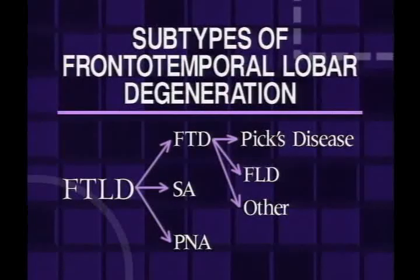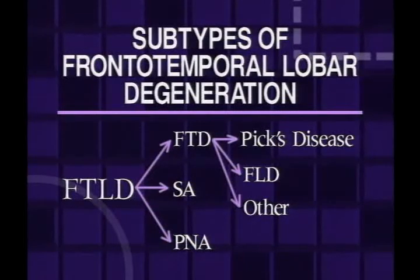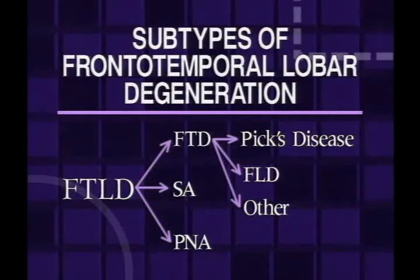Let's begin by talking about the types of dementia under the heading of frontotemporal dementia. The broad category included under this disease is referred to as frontotemporal lobar degeneration. Frontotemporal lobar degeneration is broken into three categories of diseases: frontotemporal dementia, semantic amnesia, and progressive non-fluent aphasia. The last two are very uncommon disorders that have very specific types of clinical presentation. However, frontotemporal dementia is more common, and it can be broken down into Pick's Disease, Frontal Lobe Dementia or Degeneration, and several other different types.